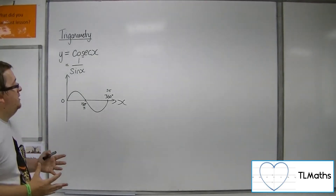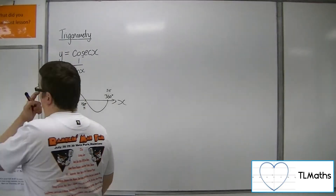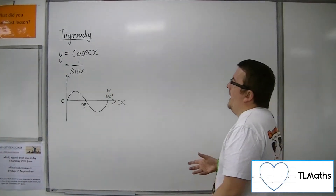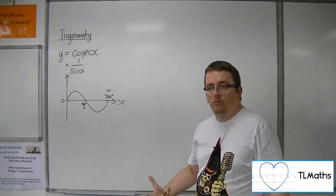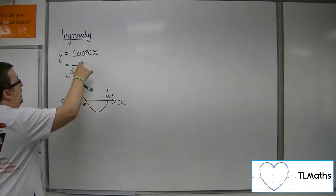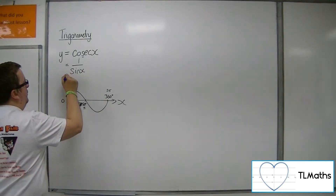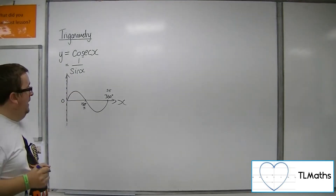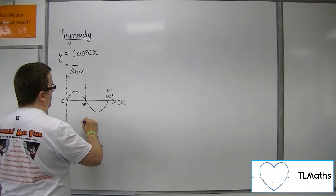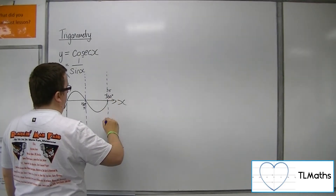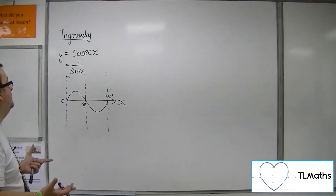What you're doing effectively is saying to yourself: if I look at each of the points on the sine curve, when x is 0, sine of 0 is 0. So if you've got 1 over 0, we must have an asymptote at 0. And exactly the same at 180 degrees or pi, we must have an asymptote, and at 360 or 2 pi, we must have an asymptote, because at those points you're dividing by 0.